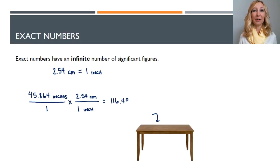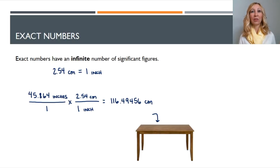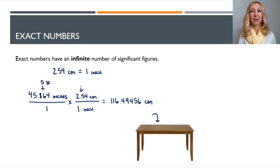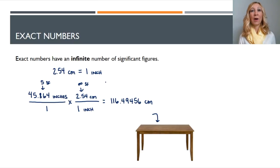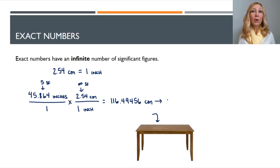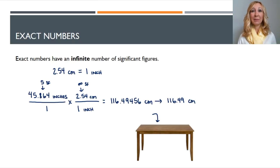I multiply them and get 116.49456 centimeters. My 2.54 conversion factor has an infinite number of significant digits, so I don't have to worry about it when determining how to round. The number I initially used, 45.864, has five significant digits. So I need my answer to have five significant figures, and I round to 116.49 centimeters — the same number of significant digits as the number with the fewest significant digits in my calculation, which is five.